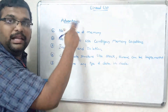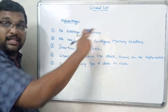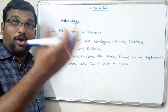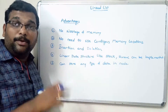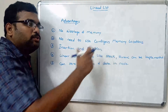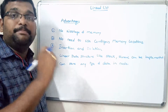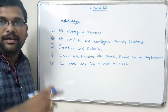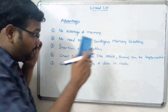To summarize the advantages: no wastage of memory because we use dynamic memory allocation; no need for contiguous memory locations because links are established between nodes; insertion and deletion are very simple because no index positions need to be moved; linear data structures like stacks and queues can be implemented easily; and any type of data can be stored in the node.